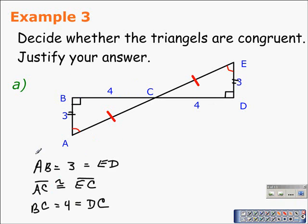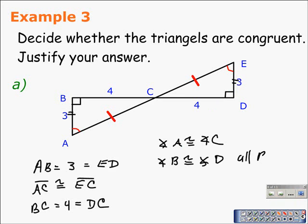We can see that angle A and angle E are marked congruent. We can also see that angle B and angle D are both marked as right angles, and all right angles are congruent, so angle B is congruent to angle D. Finally, angles BCA and DCE are not marked congruent, but they are formed by intersecting lines, making them vertical angles. By the vertical angle theorem, they are congruent — so angle BCA is congruent to angle DCE because vertical angles are congruent.